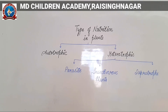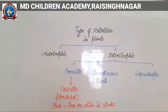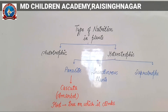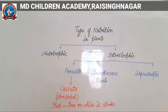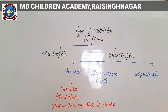Under heterotrophic nutrition, we will learn about parasite, insectivorous plants, and saphrotrophs. We will continue with parasite. What is a parasite? I am going to start with an example — amar bel, also known as cuscuta. You may have seen amar bel. It is a yellow colored tubular, tube-like structure.